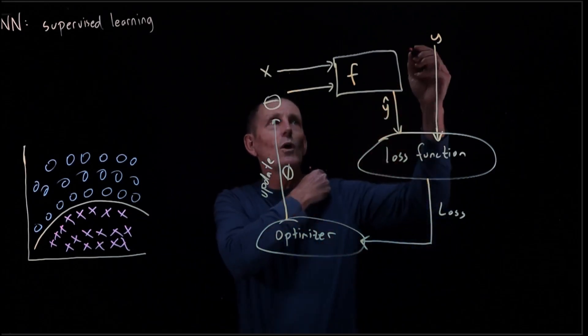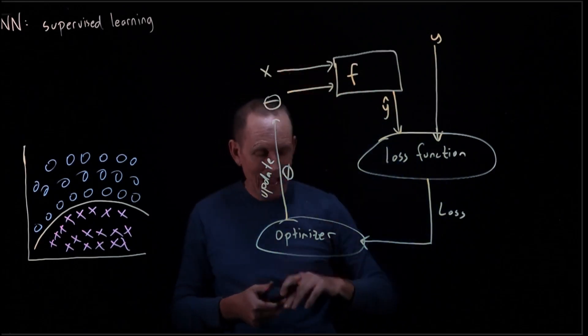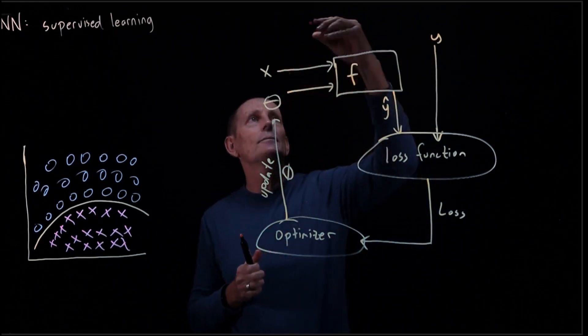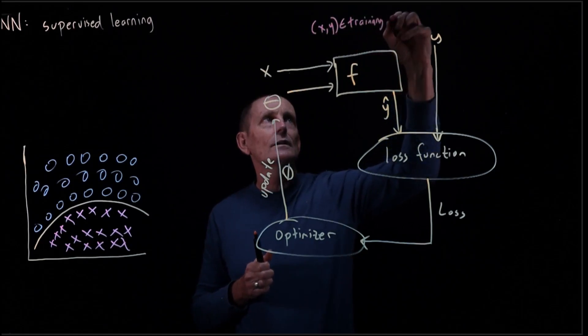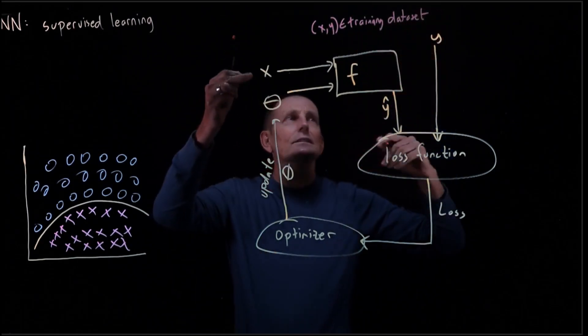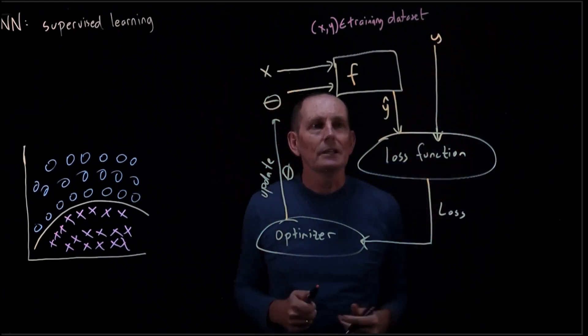So the X's and Y's come here as a matched set, right? X and Y are in our training data set. So X is coming in here, Y is coming in here.